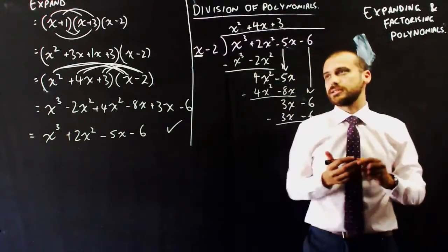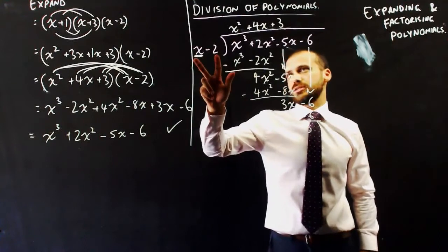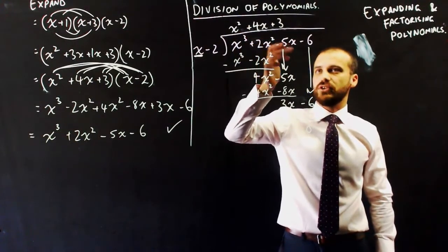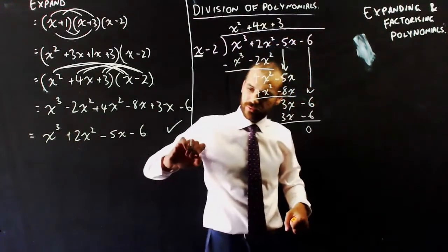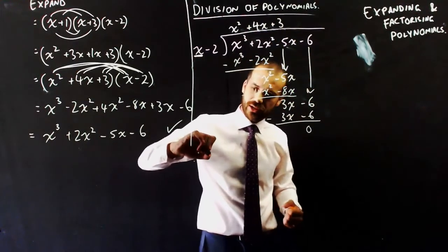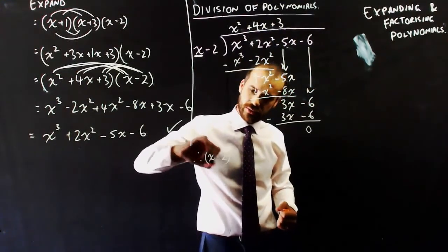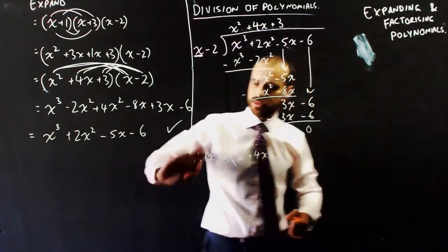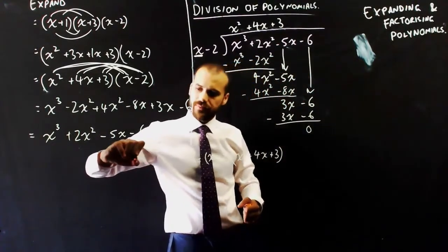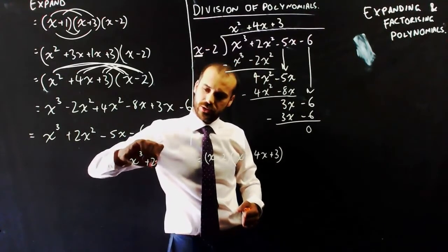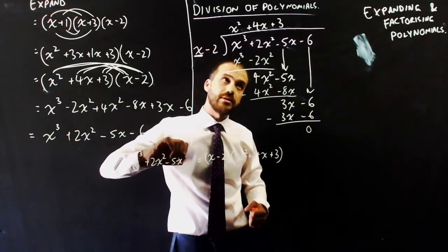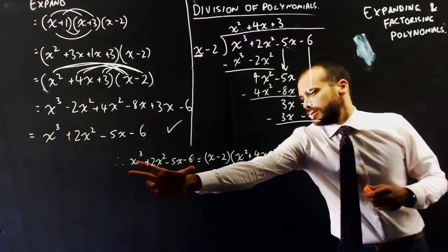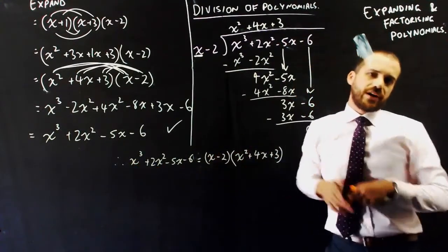So, what does all of this tell us? It tells us that x minus 2 times x squared plus 4x plus 3 will give us x cubed plus 2x squared minus 5x minus 6. So I can do a little exciting therefore sign, and I can say therefore, x minus 2 times x squared plus 4x plus 3 equals x cubed plus 2x squared minus 5x minus 6.